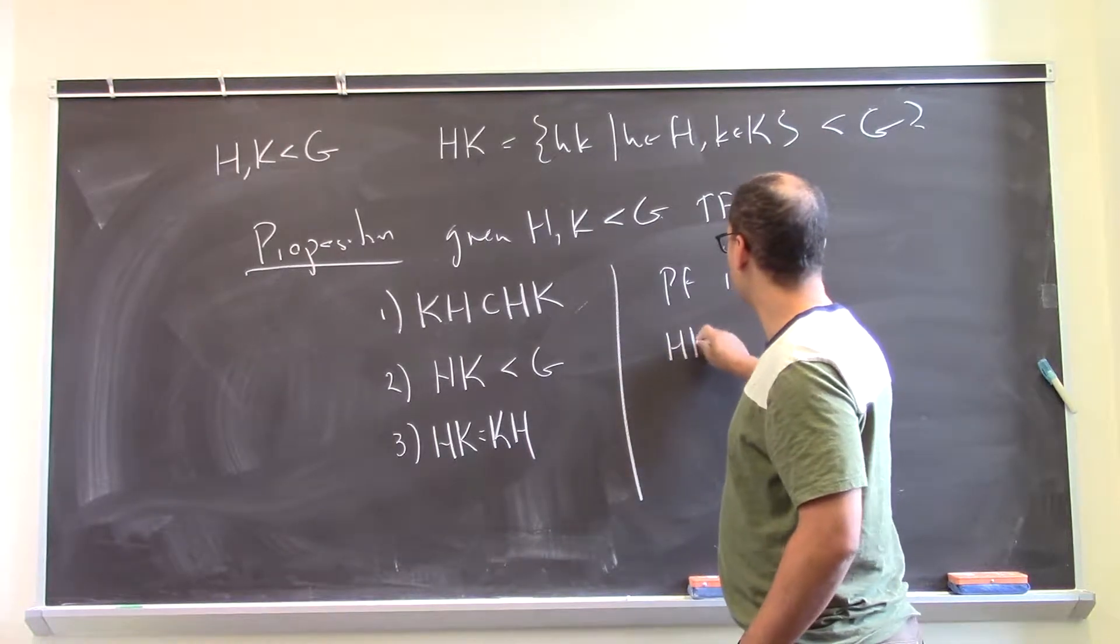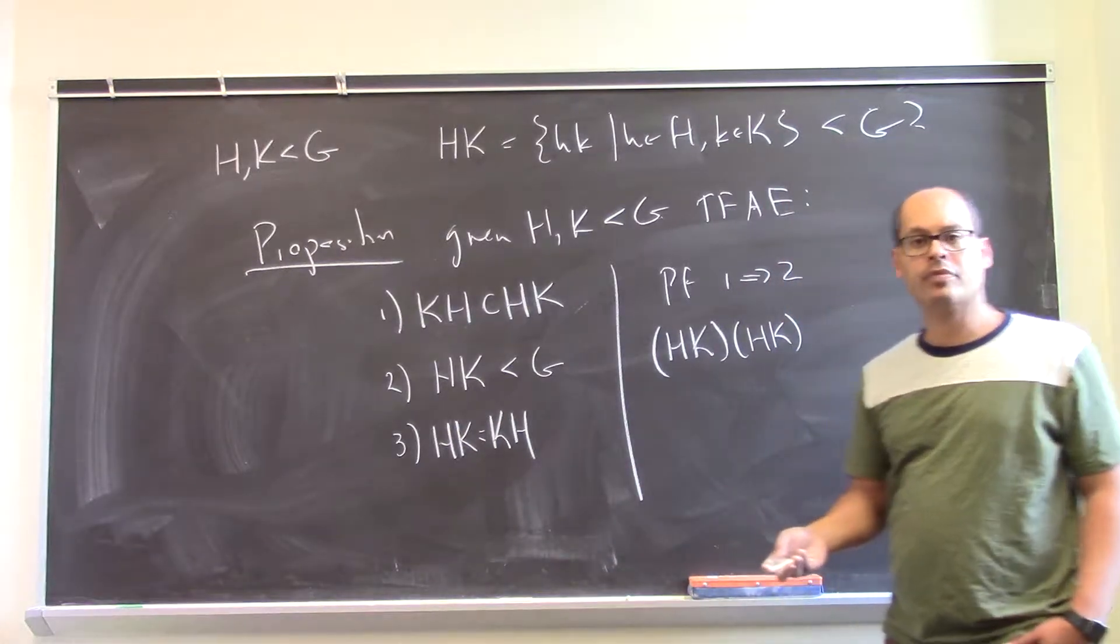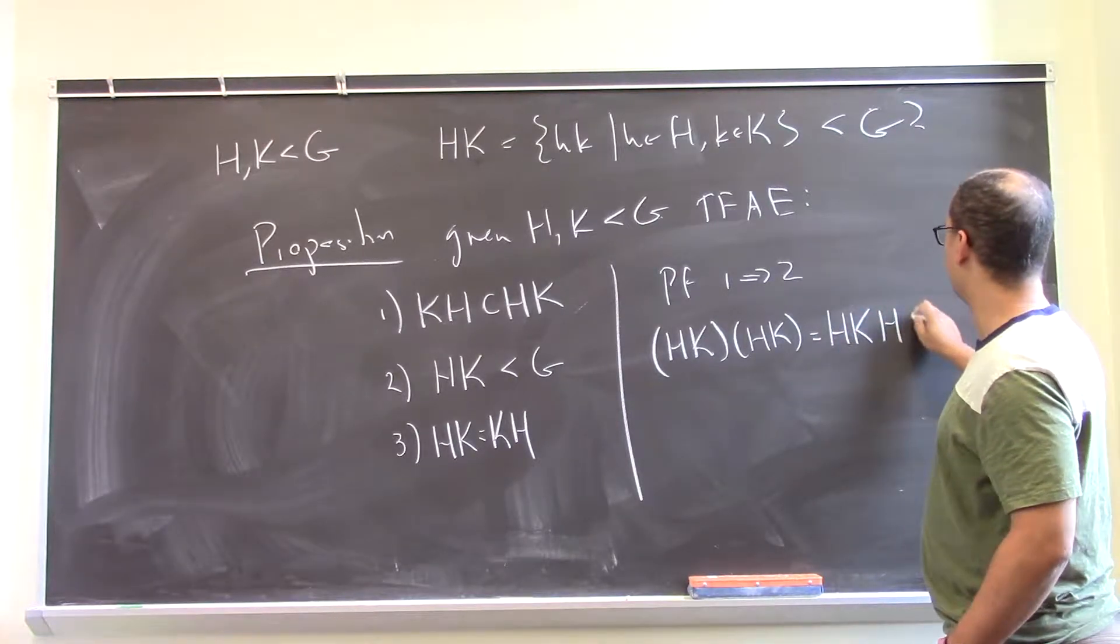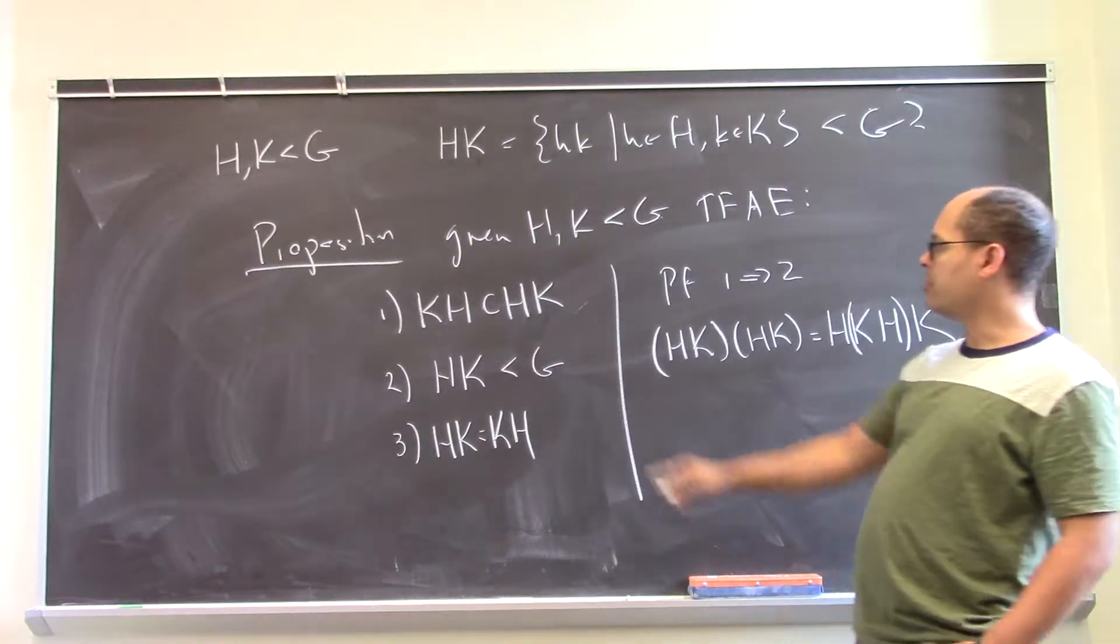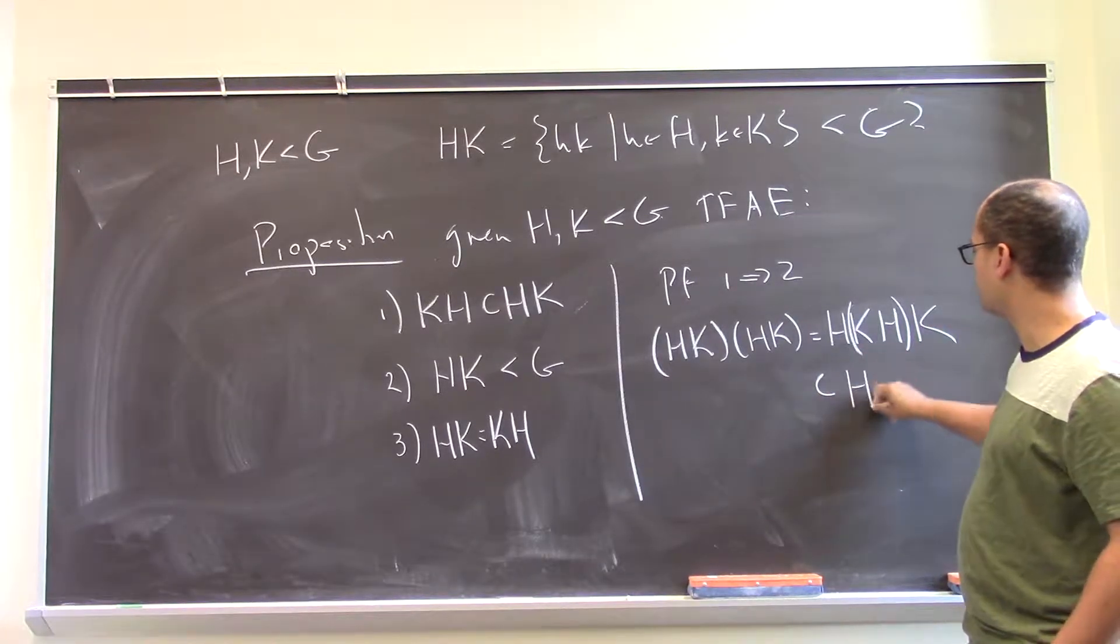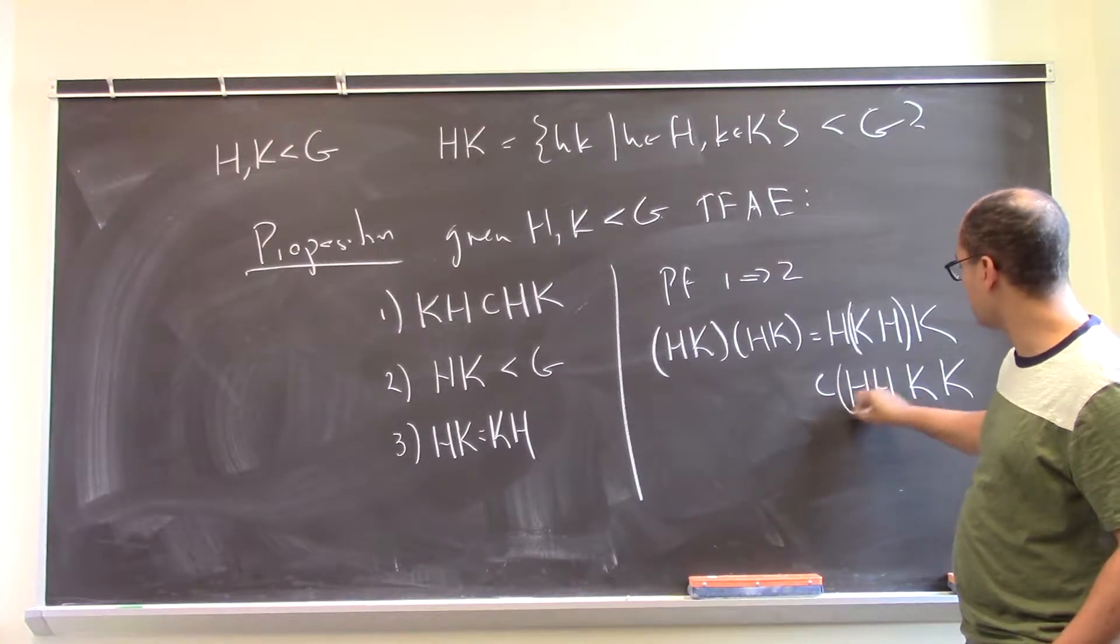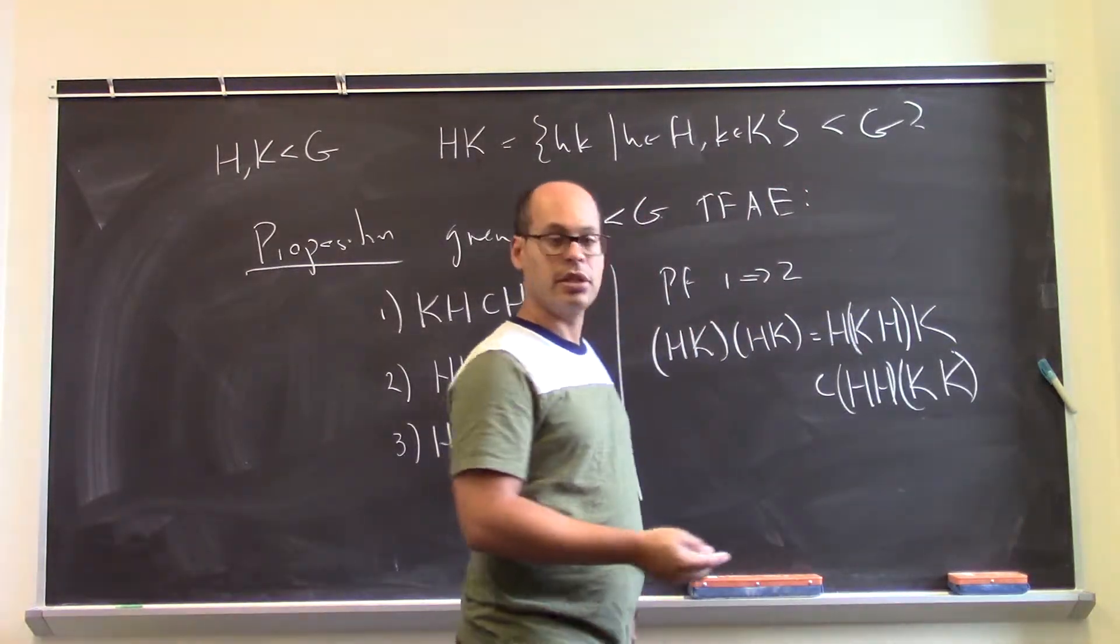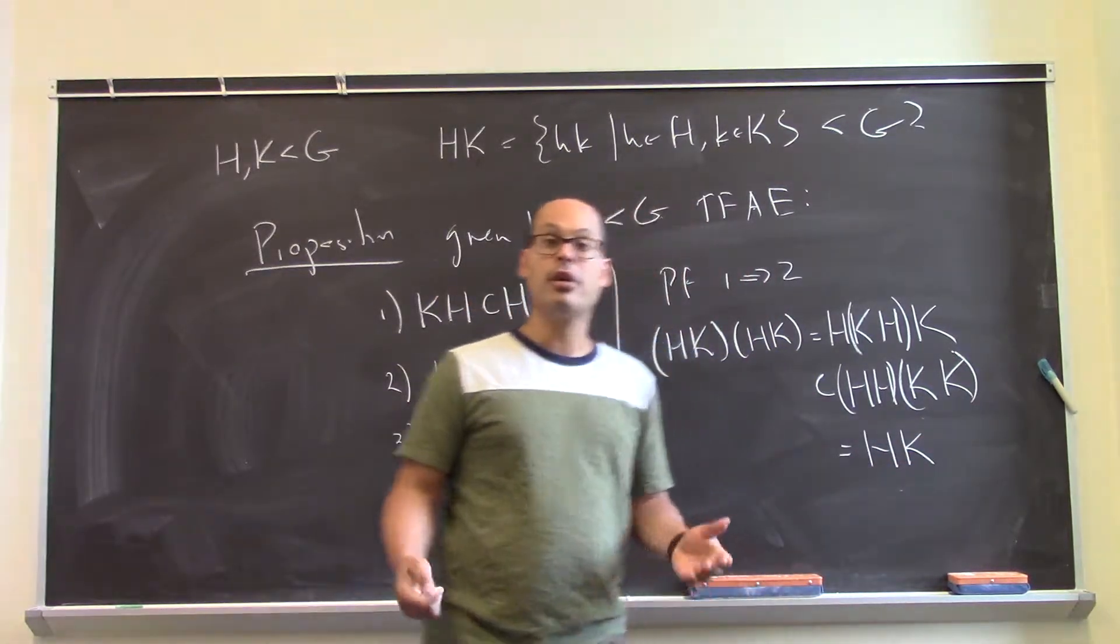I want to show that HKHK lands me back inside of HK. Well, let's just see what happens if I write this out and re-associate. That's HKHK. But if I think about these two things in the middle and I use my assumption, I can reverse the multiplication inside with a containment. This is contained inside HHKK. But then I can regroup again and think about it as HHKK. And because H and K are subgroups, HH is H and KK is K. So that's HK. And so indeed, this product is contained in there, closed under multiplication.